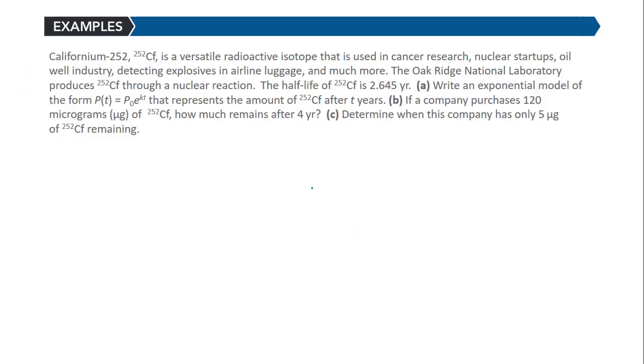Let's go through and look at an example. Californium-252 is a versatile radioactive isotope that is used in cancer research, nuclear startups, oil well industry, detecting explosives in airline luggage, and much more. The Oak Ridge National Laboratory produces Californium-252 through a nuclear reaction. The half-life of this isotope is 2.645 years.